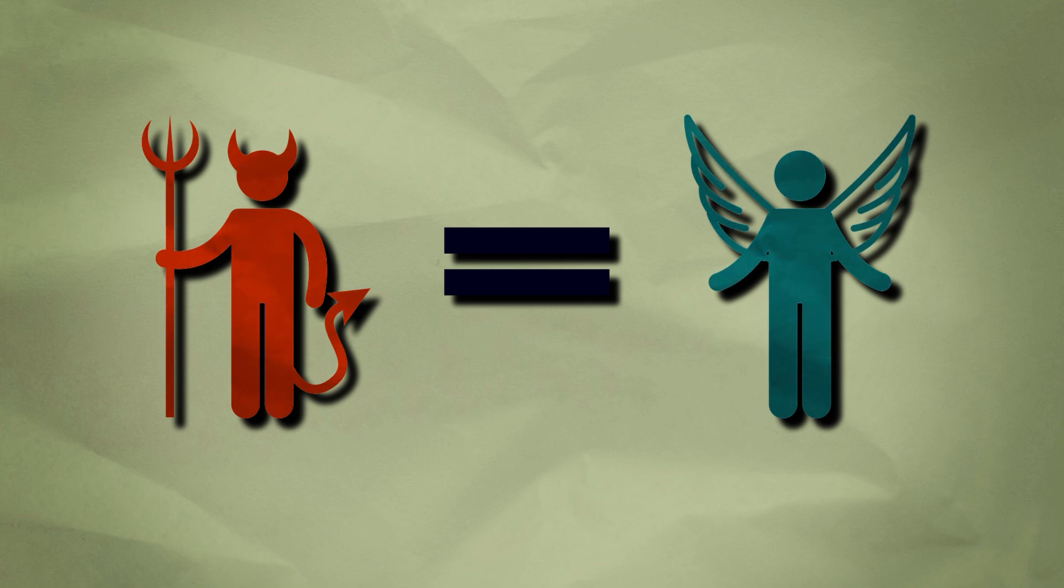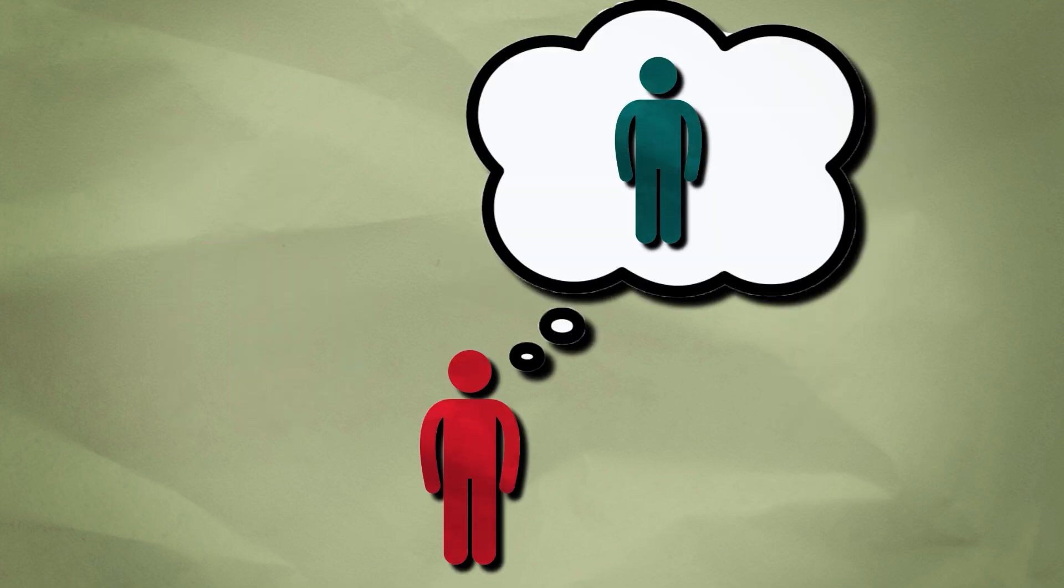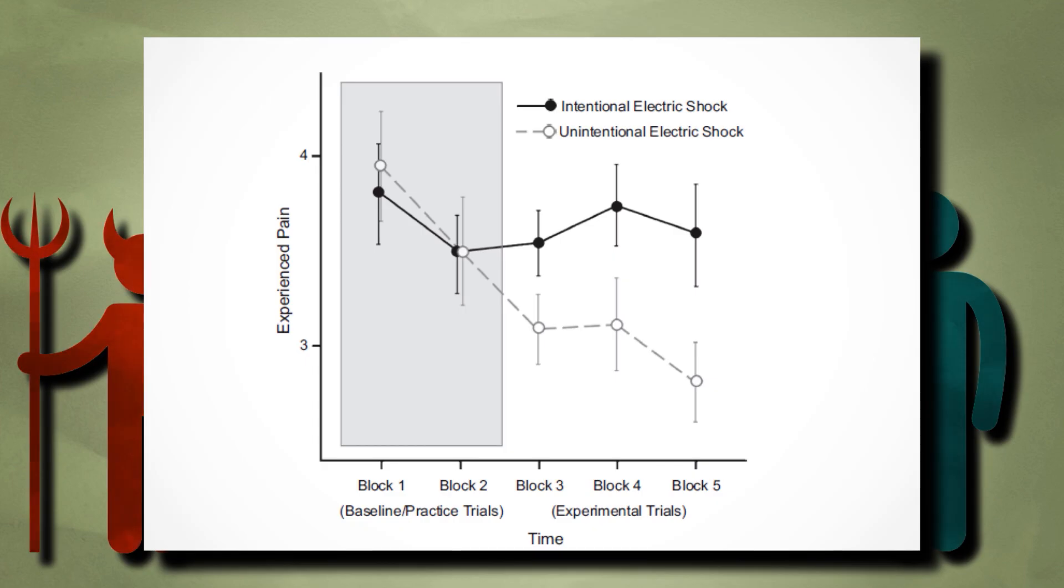In truth, the devil and angel conditions were exactly the same. The only difference was how the participants perceived the study partner. In the devil condition, when the participant thought the study partner was deliberately shocking them, they reported the shocks as much more painful and they took much longer to adapt to the pain.